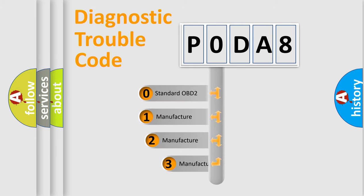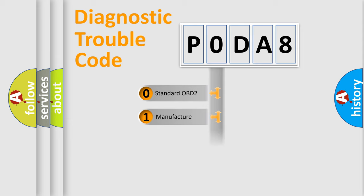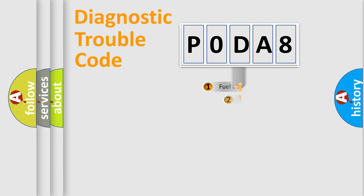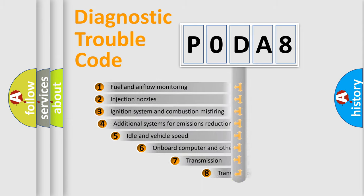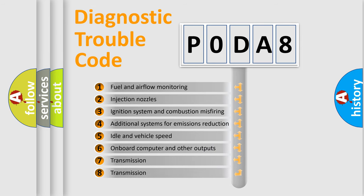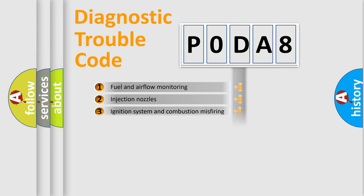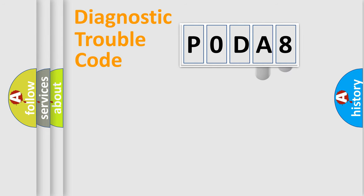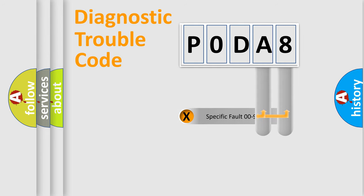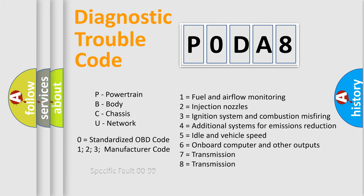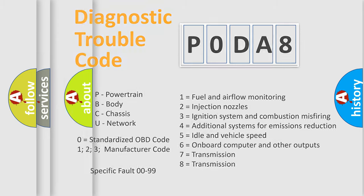If the second character is expressed as zero, it is a standardized error. In the case of numbers 1, 2, or 3, it is a manufacturer-specific expression of a car-specific error. The third character specifies a subset of errors. This distribution is valid only for the standardized DTC code, and only the last two characters define the specific fault of the group. Such a division is valid only if the second character is expressed by the number zero.